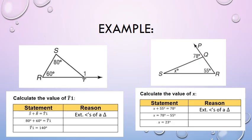On the right-hand side, the interior angles S and R added together equal the exterior angle of 78 degrees. So you write: x plus 55 equals 78. Reason: exterior angles of a triangle. Find x alone by moving the 55 over — it becomes negative 55 — so x equals 23 degrees.